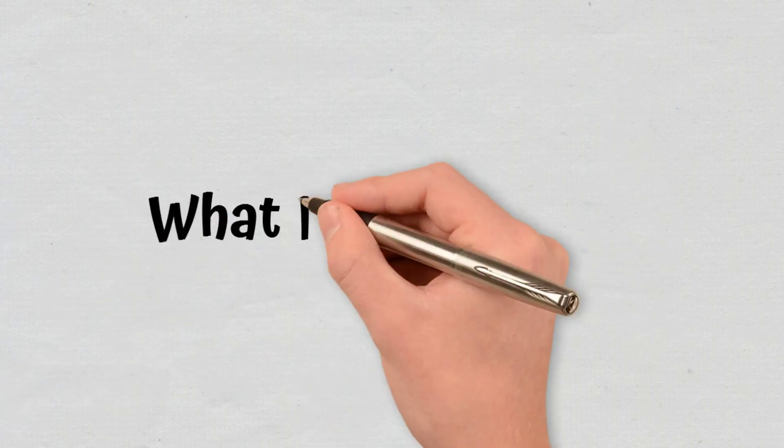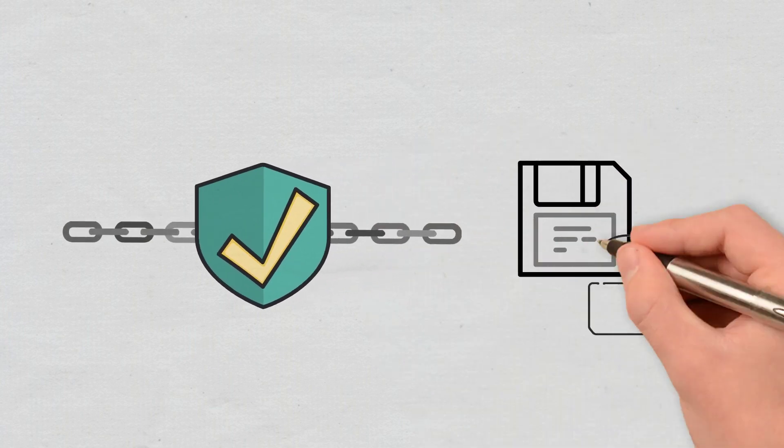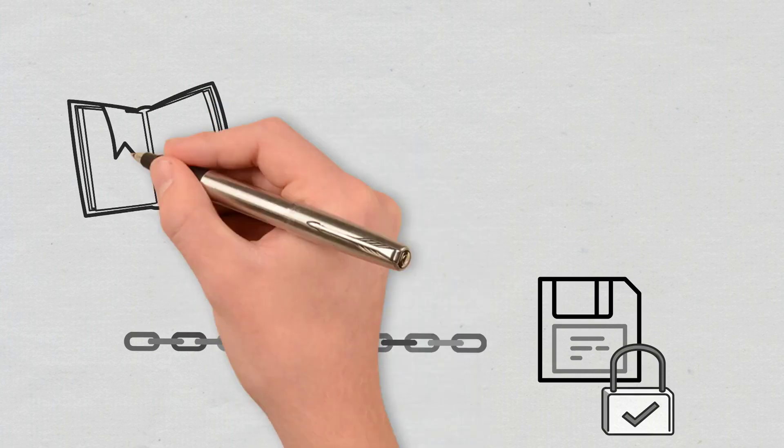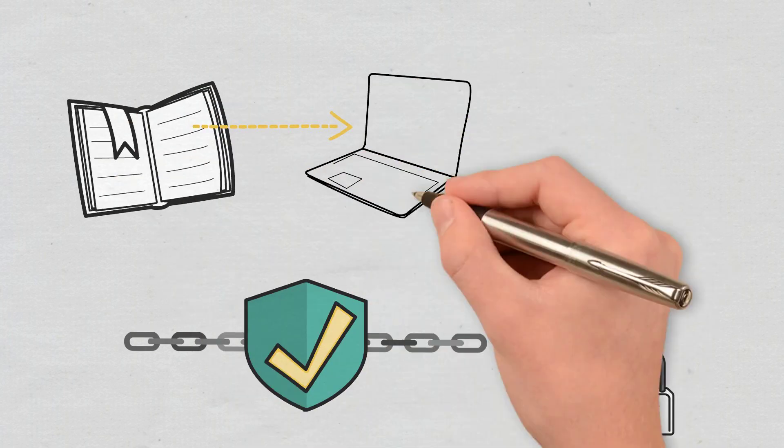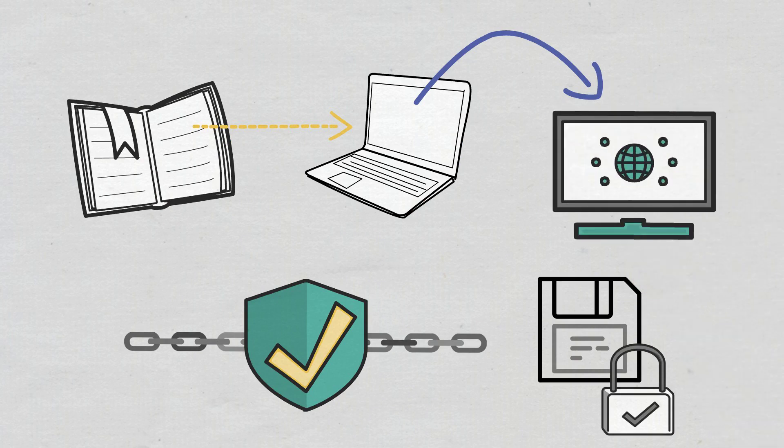What is blockchain? Blockchain represents a type of system for recording information in such a way that it would be difficult or even impossible to make changes to it, hack it, or cheat it. It is basically a digital ledger of transactions that is duplicated and distributed across a network of computer systems on the blockchain.